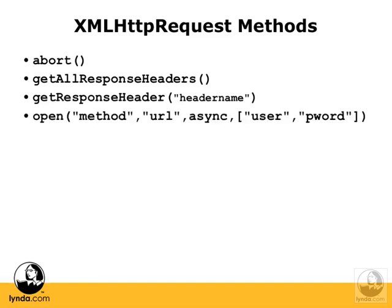There's the Open method, which can be passed several different parameters: Method, URL, and AsyncFlag, which is true or false, and the optional Username and Password. The most common example we'll be seeing is Open, passing it a GET, then passing it a URL like myfile.xml, and then passing a value of true. The AsyncFlag can be true or false — asynchronous is true, meaning everything is going on without your code having direct control over it. If we set async to false, then the request is synchronous, meaning your code will sit and wait for anything to come back from the server. The real value of XMLHttpRequest is in being asynchronous, so you're almost always going to want to do an asynchronous request.